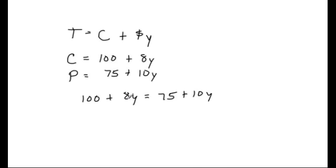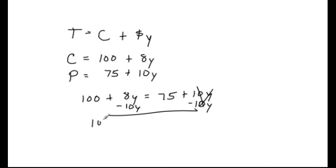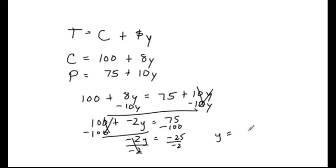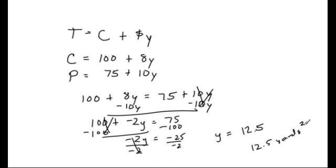We move the variables to the left by subtracting 10y from both sides. Those cancel, leaving 100 − 2y = 75. Now it's a two-step equation: subtract 100 from both sides, giving −2y = −25. Divide both sides by −2, and y = 12.5. So at 12.5 square yards, both companies cost the same. If you're getting less carpet, go with Carpet Plus since they only charge $75 upfront. If you need more than 12.5 yards, go with Carpet World — even though they charge more initially, they charge less per yard.